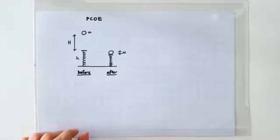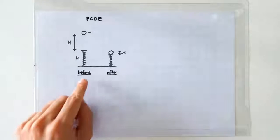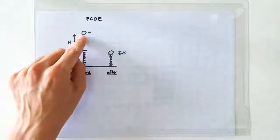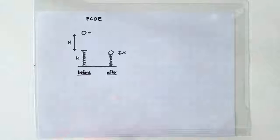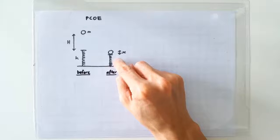As usual, we need to identify the before and the after instance if we want to apply PCOE. So the before instance should be the instance when the ball is dropped and the after instance is when the spring is at its maximum compression.